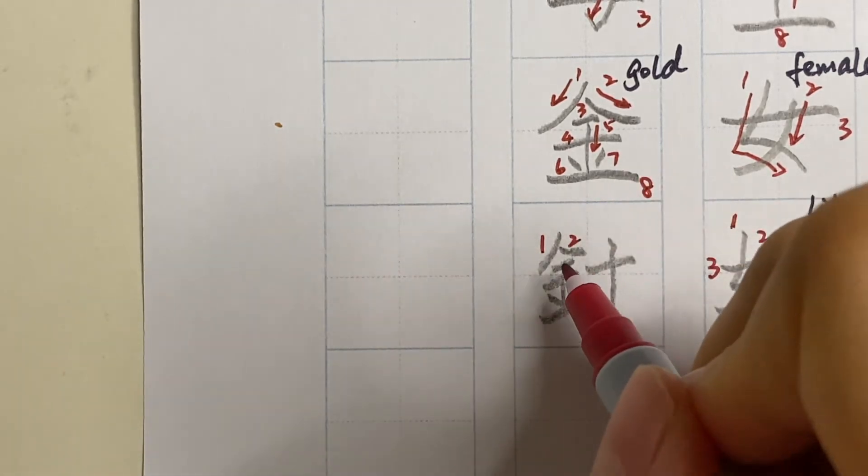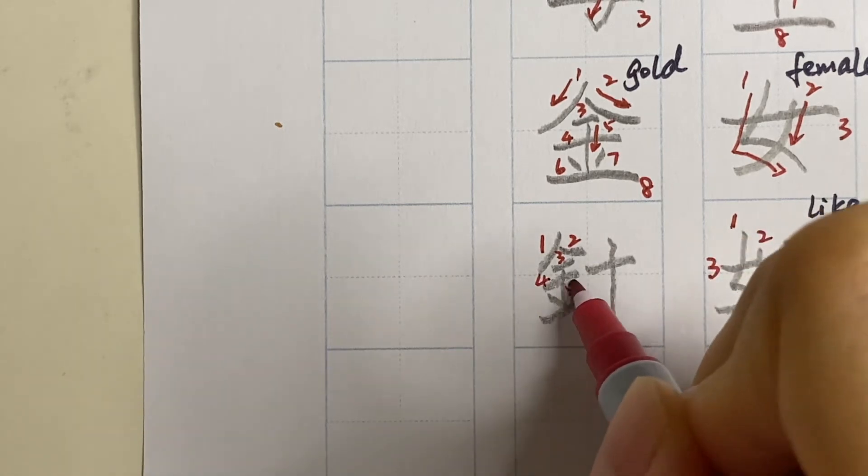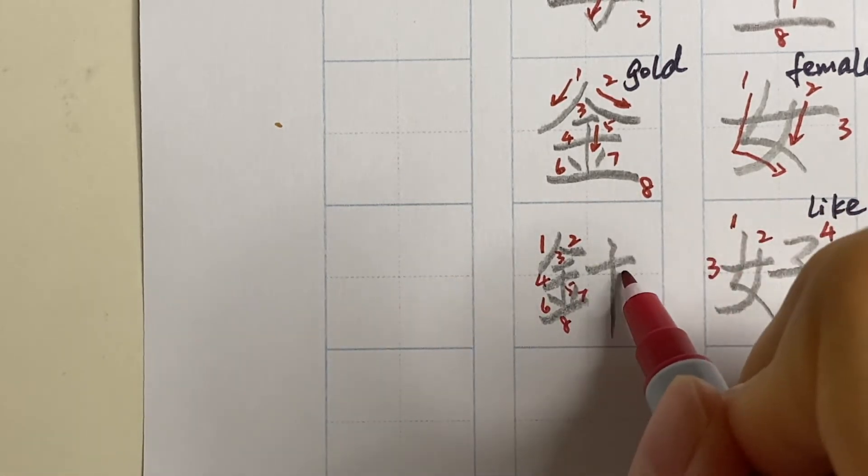When it's used as a radical, it can appear on the left. Again, it becomes slimmer, and the meaning can mean metal sometimes. This kanji is hari, the needle.